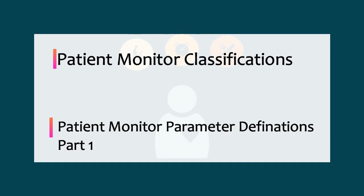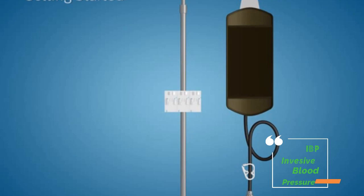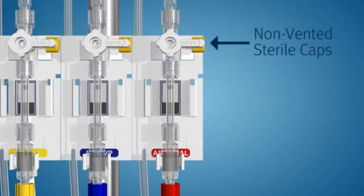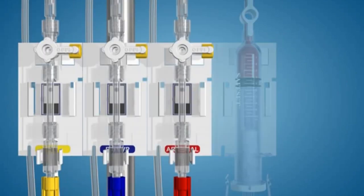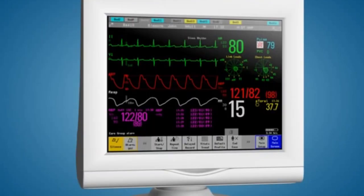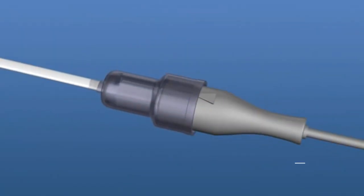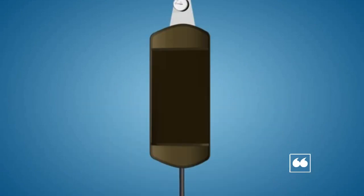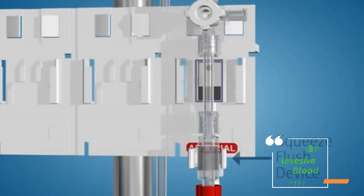Let's start with invasive blood pressure monitoring. Arterial blood pressure is most accurately measured invasively through an arterial line. Invasive arterial pressure measurement with intravascular cannulas involves direct measurement of arterial pressure by placing a cannula needle in an artery, usually radial, femoral, or brachial.